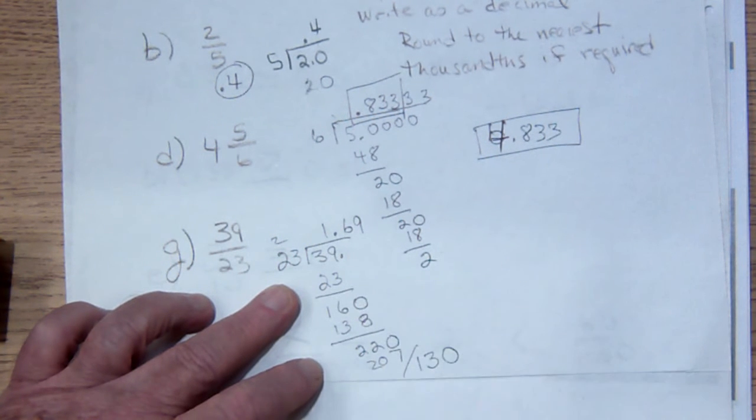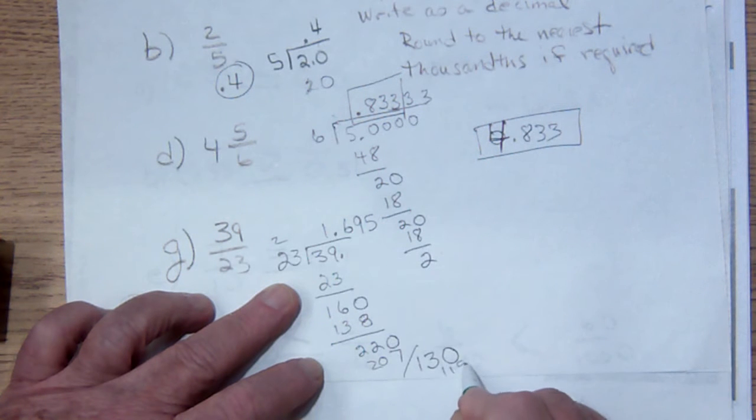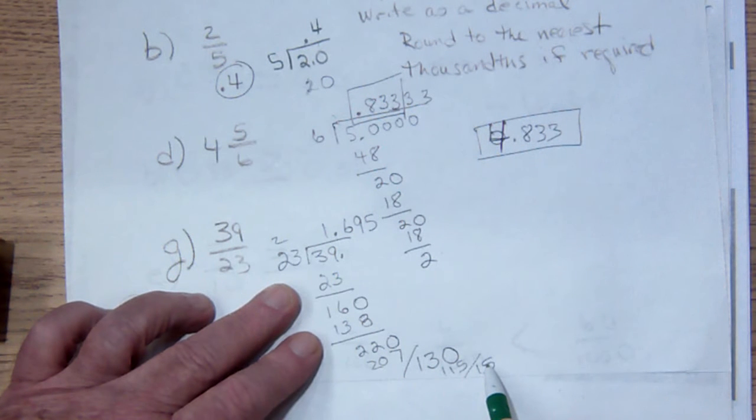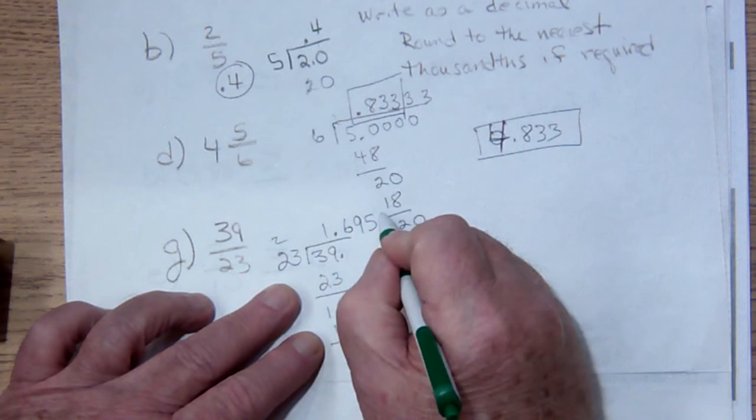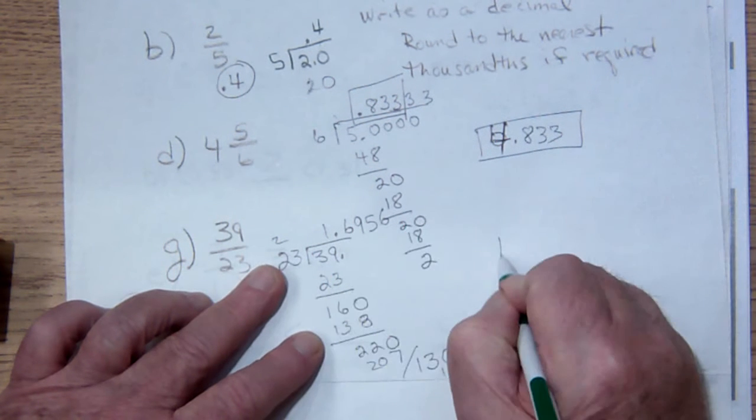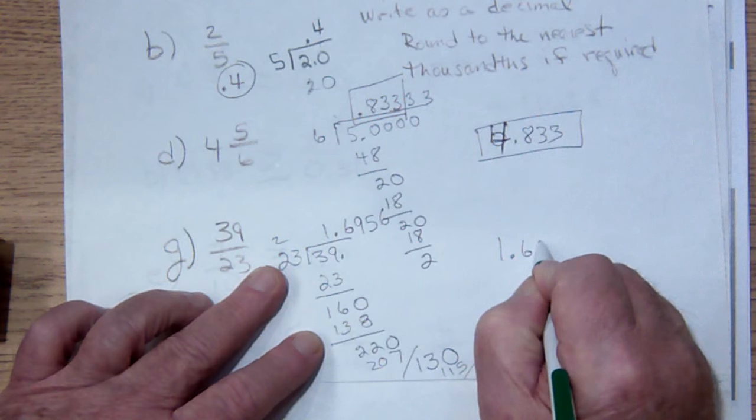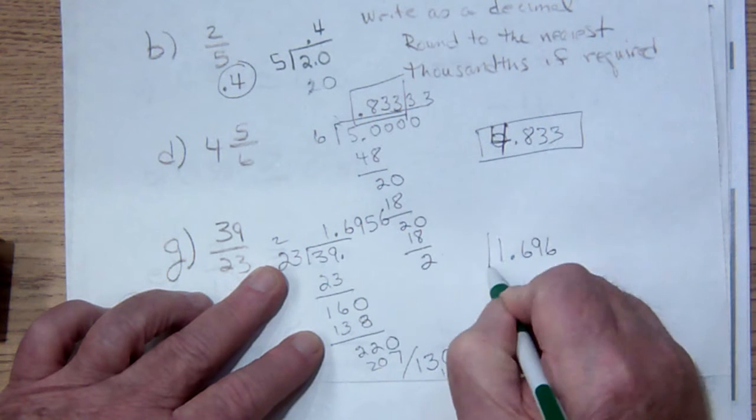And I bring down the 0 yet again, and that's going to go in there, not 6 times, but 5. And we'll get 1, 15. We'll divide, and we'll get 15, and that will go into that another 6 times. So if I round off this, I'm going to get 1.696 as my answer.